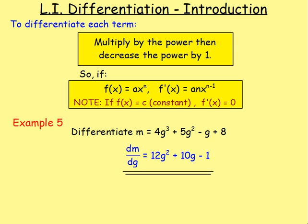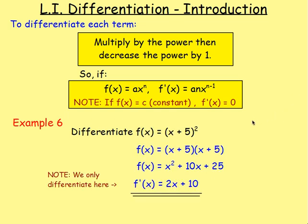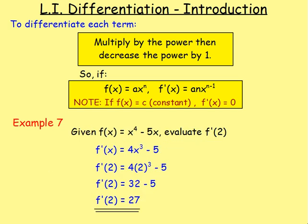Here are some examples — remember, this is not all the examples, look back to that lesson if you want more. Example 5 was: differentiate m equals a function in terms of g, so you would work out dm by dg. With one example, you had brackets — x add 5 all squared — so first multiply them out, then differentiate, bringing in f dash x only when differentiating. With another example, we had to evaluate f dash 2: differentiate and then replace x with 2.